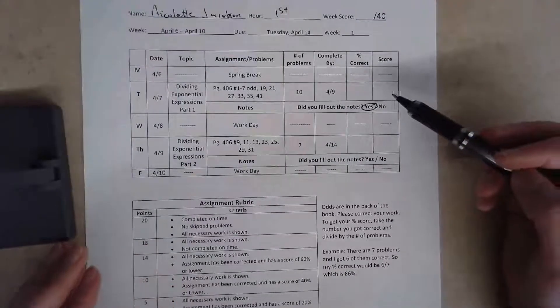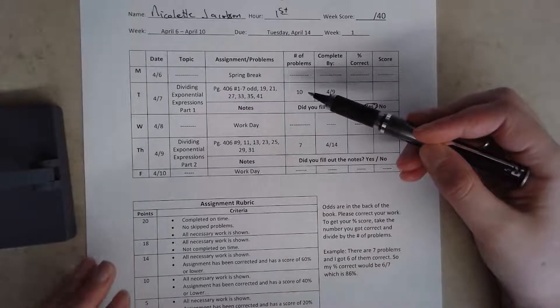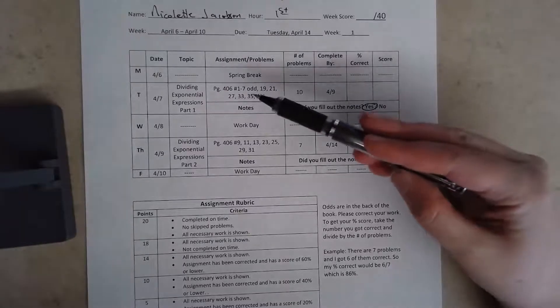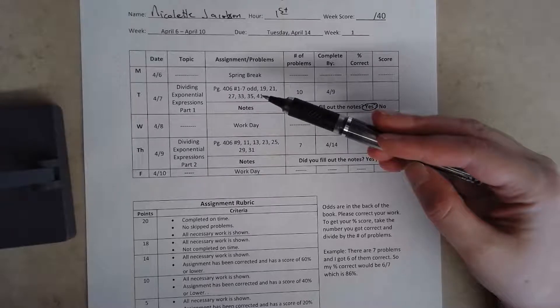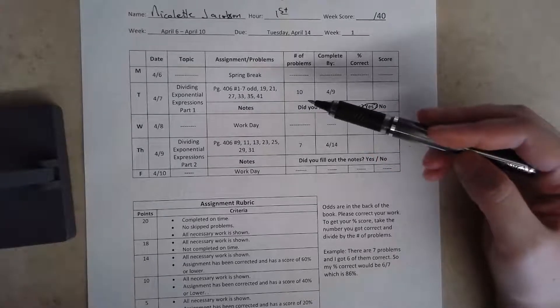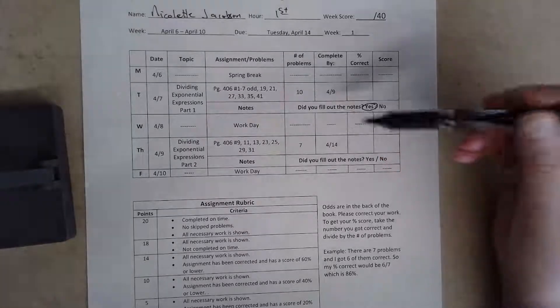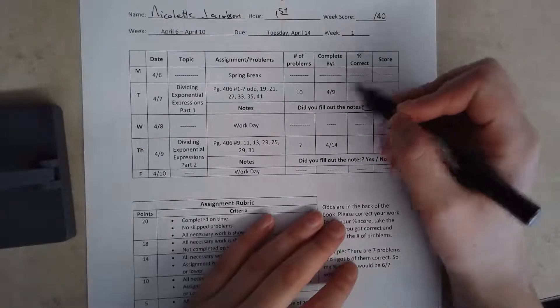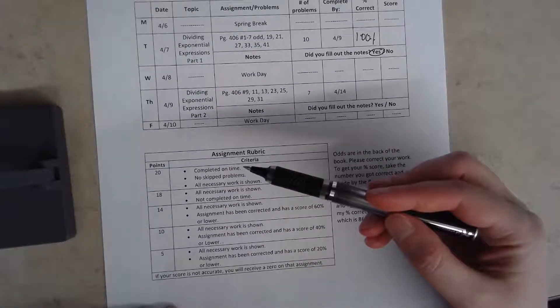Okay, so there are ten problems. And let's say I did those ten problems. And if you notice, they're all odd and they're from the book. I'm gonna try to do all the assignments from the book that way you don't have to print off worksheets or anything like that. So I do those ten problems, then I go to the back of my textbook where all the odd answers are and I'm going to check it. And I go through it and I check it and I got ten out of ten, so I got a hundred percent.